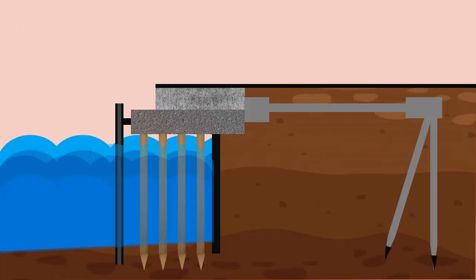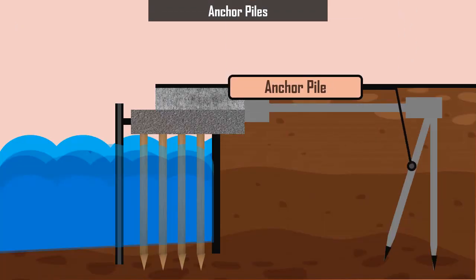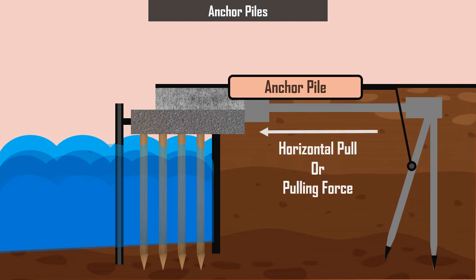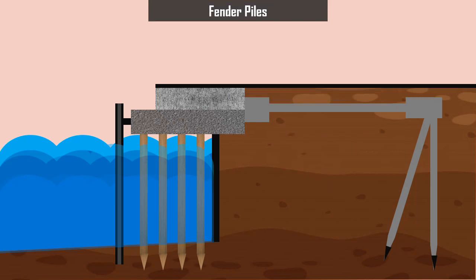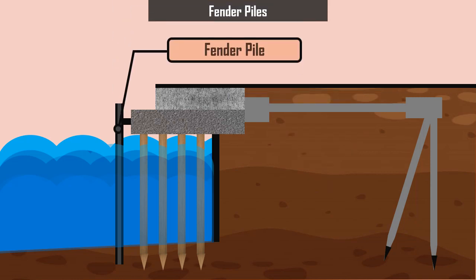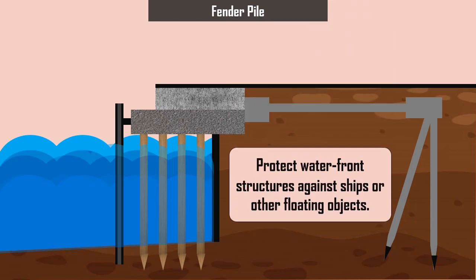Anchor piles: these piles provide anchorage against horizontal pull from sheet piling or other pulling forces. Fender piles: these piles are used to protect waterfront structures against ships or other floating objects.